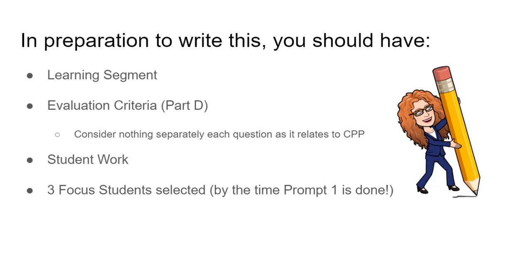In preparation to write this, you should have your learning segment done in front of you. You should have evaluation criteria — that is a separate part, not part of the commentary; it's called Part D if you look at your handbook. I suggest it could be something like a chart that talks about what kinds of work would be shown to get full credit, partial credit, or no credit on different questions.